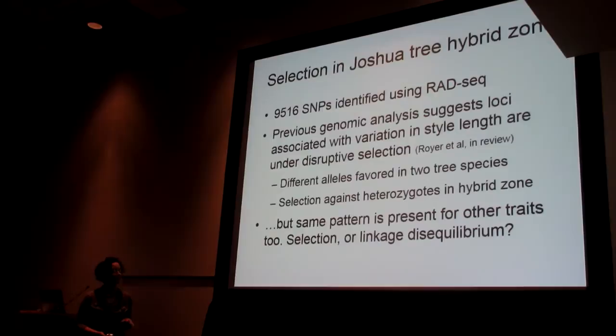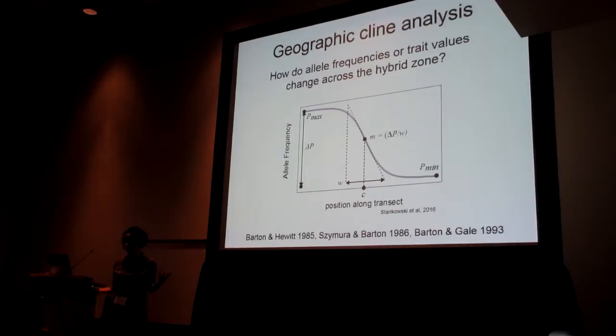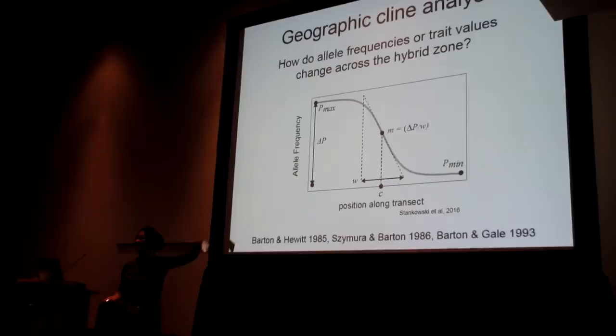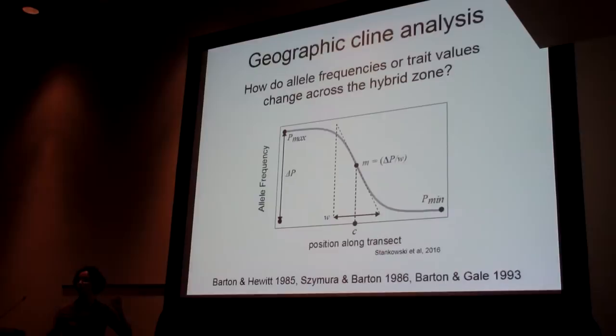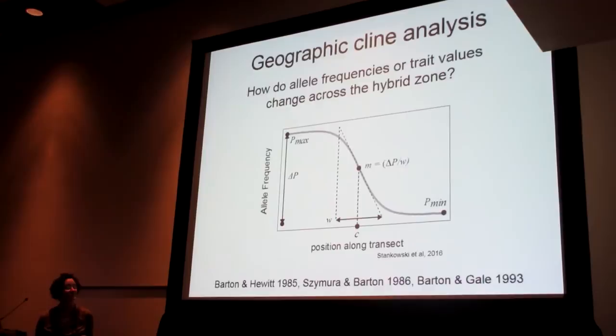To try to tease those things apart, we decided to take an explicitly geographic approach — a geographic cline analysis. This is a method developed in the 1980s and 90s to look at how the frequency of an allele or phenotype of interest changes as you move across the hybrid zone. The x-axis is your position along a transect perpendicular to the hybrid zone. The two parameters I'm going to focus on today are the center of the cline and the width — at what point does the cline stop being steep and move into the tails. I'll walk through a few hypothetical clines first.